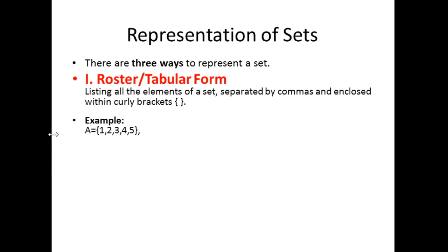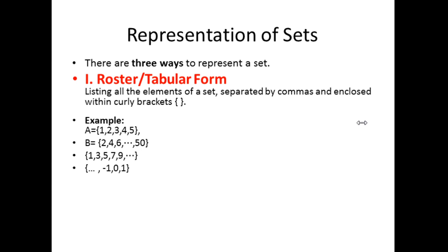For example, set A = {1, 2, 3, 4, 5}. Another example is set B = {2, 4, 6, ..., 50}, meaning even numbers from 2 to 50. We can also have an infinite set of positive odd numbers written in roster form. As long as you put the elements inside the curly brackets separated by commas, that is a set in roster or tabular form.